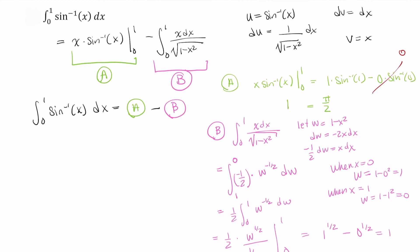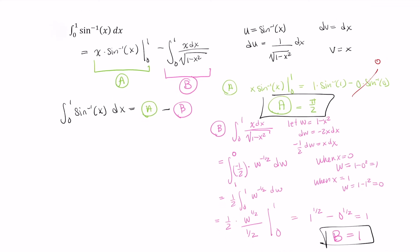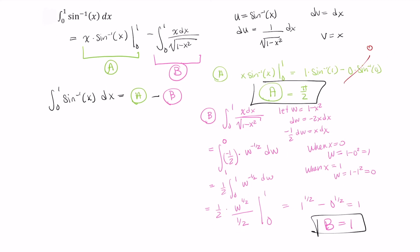Okay, so A is equal to pi over 2, and B is equal to 1. So let's put that all together.